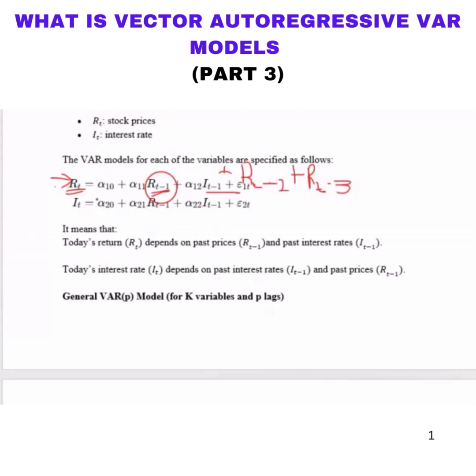The stock prices in 2026 is explained by the prices in 2025, the prices in 2024, stock prices in 2023, plus now you go to interest rate - interest rate in 2025, maybe interest rate in 2024, plus interest rate in 2023. Now you add at the end you add your error term.